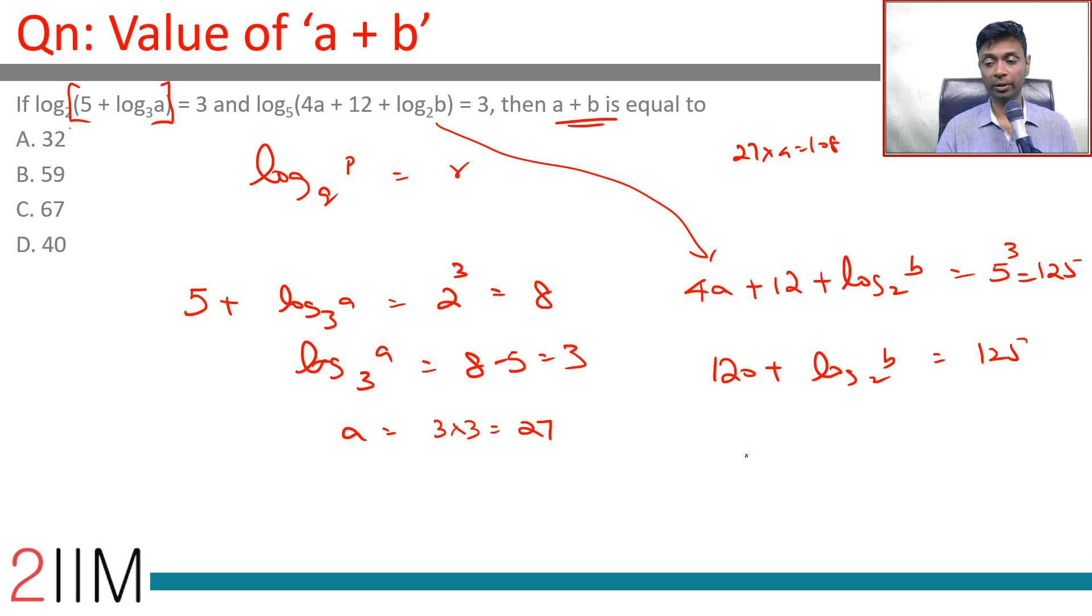Log b to the base 2 is 5, so b is 2 power 5 which is 32. A is 27, b is 32, a plus b is 27 plus 32, which is 59.